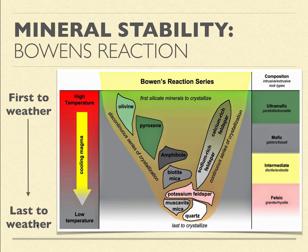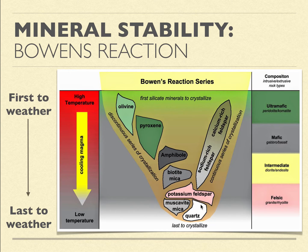Looking at the three minerals at the bottom, which formed at lower temperatures and were last to weather — these cooled the slowest. We have potassium feldspar, muscovite mica, and quartz. These are the last to crystallize and are pretty much your recipe for most household granite. On the other side, sodium-rich and calcium-rich feldspars are more susceptible to weathering.